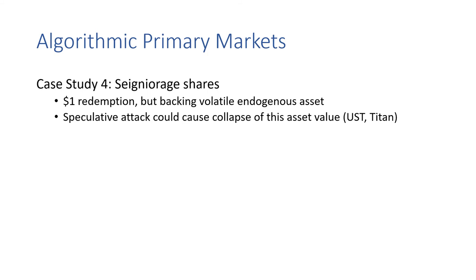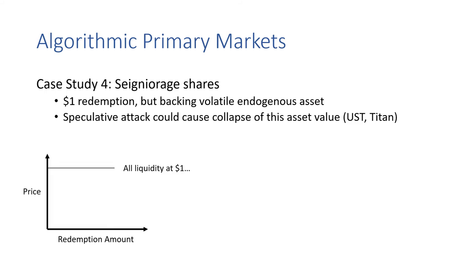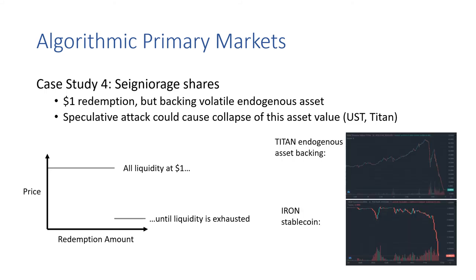Lastly, consider seniored shares stablecoins. These are redeemable for a dollar's worth of assets, but mostly backed by a volatile endogenous asset with a self-referential price. Speculative attacks can cause the collapse of this asset value, as seen in both Terra and Iron — also known as Titan — fatally for the Iron system. The protocol can provide liquidity at a dollar until it's exhausted, at which point the peg must break and the system may enter a death spiral. In the Iron stablecoin system, Titan was the endogenous underlying asset whose value went to zero, as large redemptions occurred in Iron. Since Iron is redeemed for a dollar's worth of newly minted Titan, this caused the inflation of Titan to a zero dollar value.